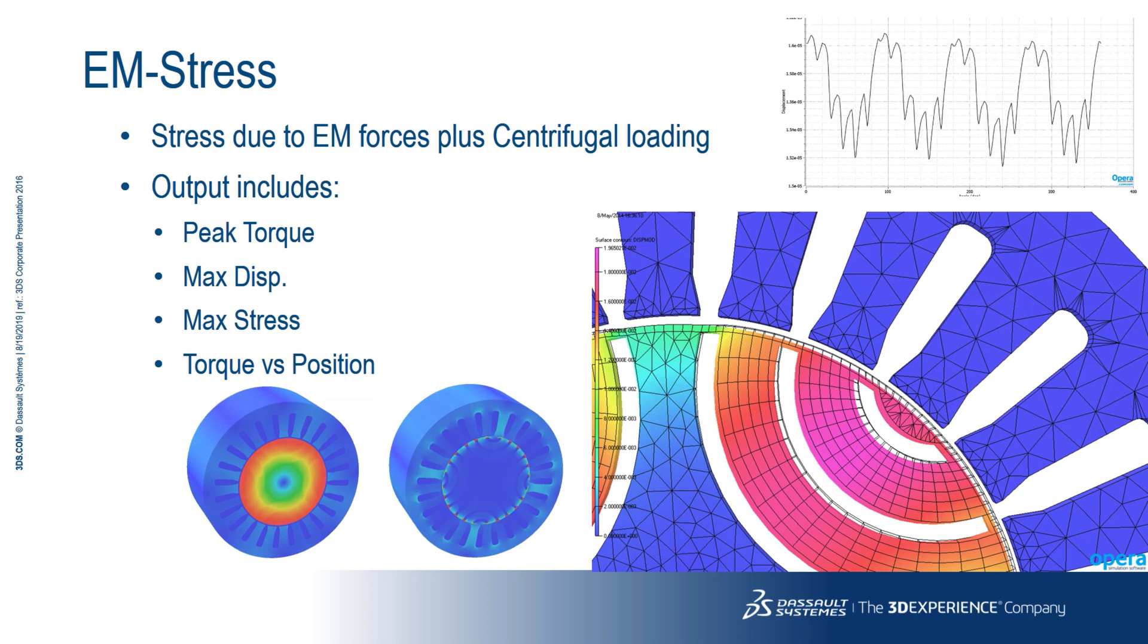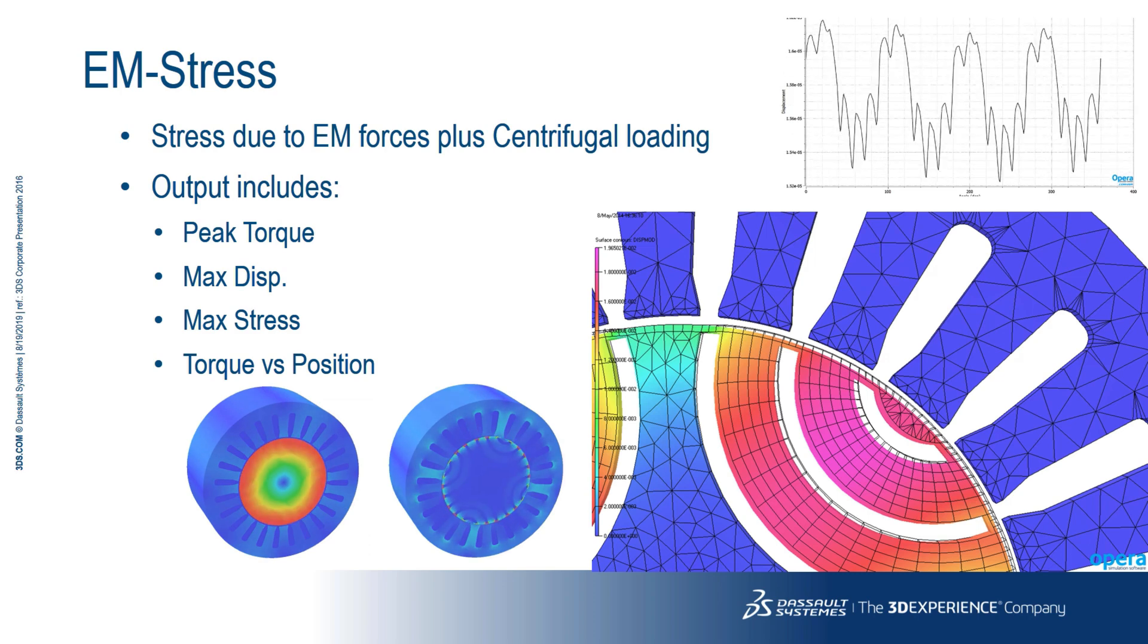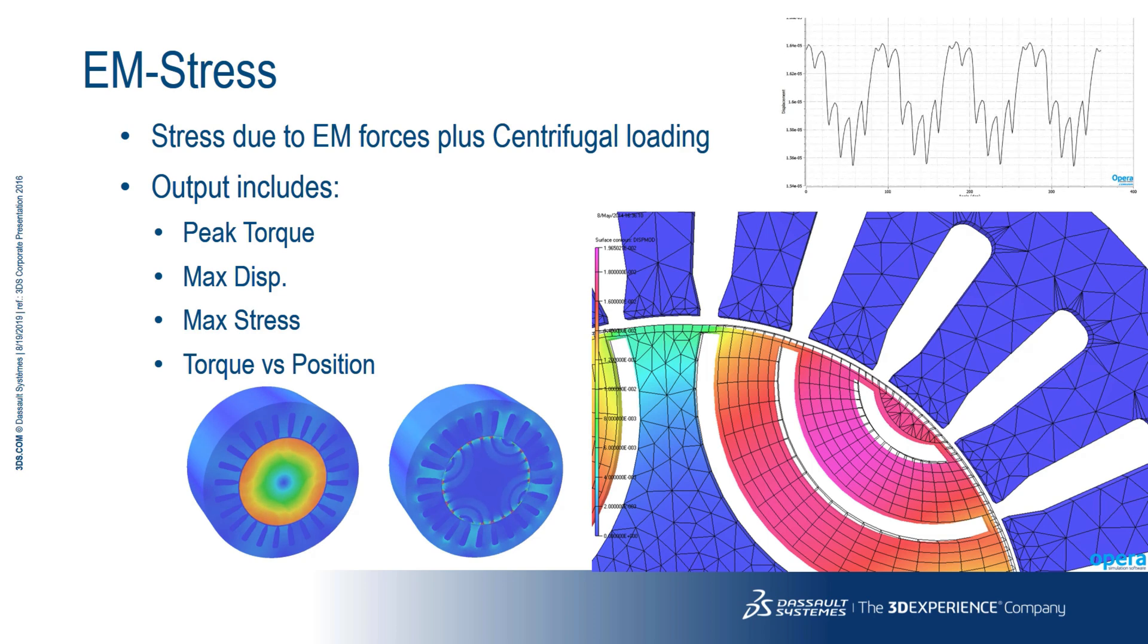The electromagnetic stress analysis creates a series of static jobs for different rotor positions with the stress stage added to each of these jobs. The output includes the value of peak torque, its mechanical angular position, maximum displacement, maximum von Mises stress and the torque versus position curve.